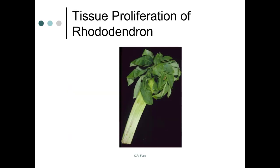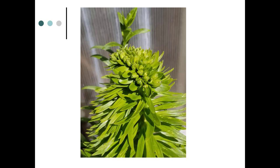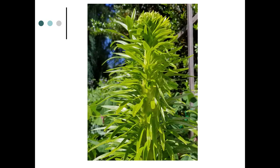Tissue proliferation on rhododendron looks like this — it doesn't even look real. This is from outside the greenhouse, from a couple of years ago. We had some leafhoppers on this plant early on, and you can see the damage on the leaves. Then you also have the fasciation that occurs on the stem, which you can see more clearly here.